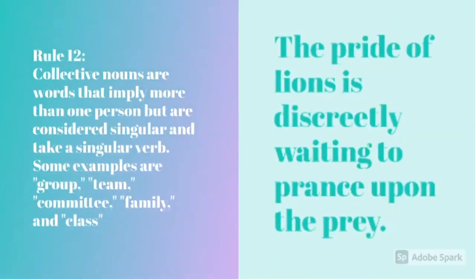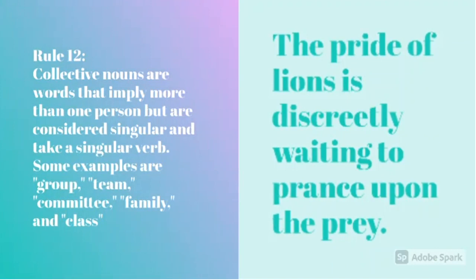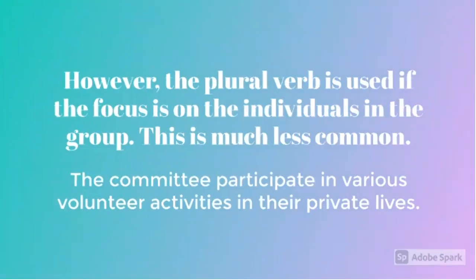Rule 12 is, collective nouns are words that imply more than one person but are considered singular and take a singular verb. Some examples are group, team, committee, family, and class. An example is, the pride of lions is discreetly waiting to prance upon the prey. Here, the pride of lions is a collective noun, so we are using is as the verb. However, the plural verb is used if the focus is on the individuals in the group. This is much less common.